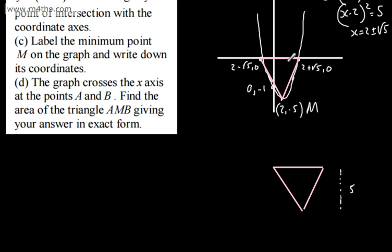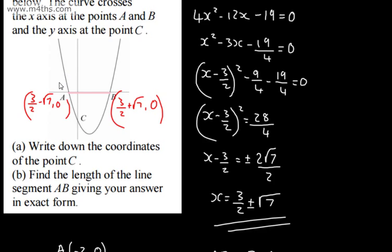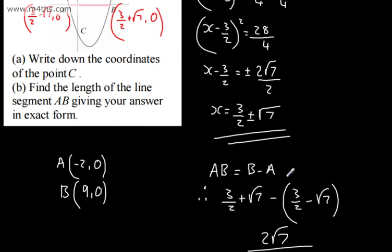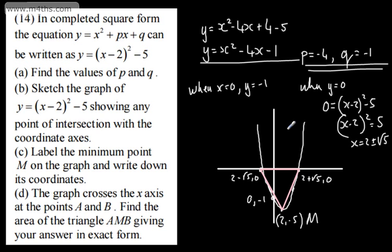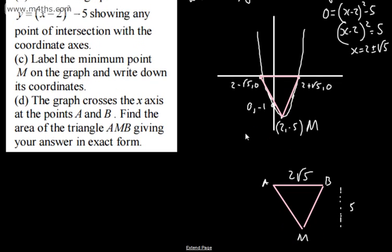If we consider now this length, similar to the last question, if I do now 2 + √5 subtract 2 - √5, this is simply going to give me 2√5 units. If that's A, that's B, and that's M. So if we just go back to the last question, we saw when we did this, that distance was 2√7. Here, we're just going to have 2√5. So, we've got now a perpendicular height. This is the perpendicular height because it's the y-coordinate. So it's perpendicular. The line just here is going to be perpendicular to the x-axis.